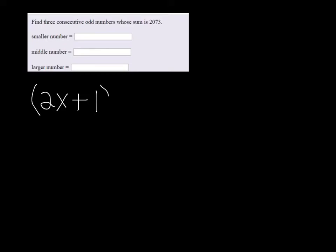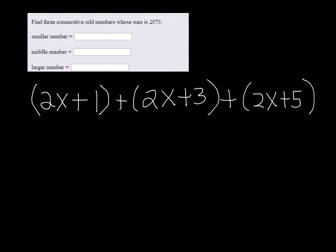So our first one will be 2x plus 1, and then if you want your next odd, that'll be 2x plus 3, and your next odd will be 2x plus 5. And when we add that all together, we want 2073.